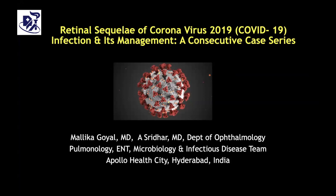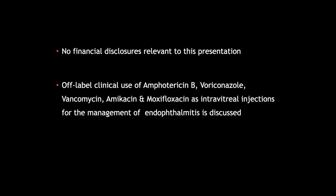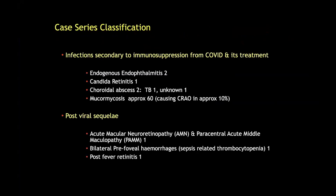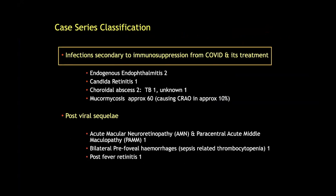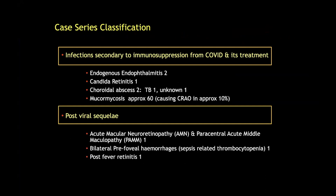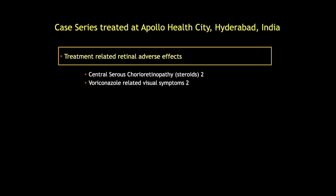Retinal sequelae of COVID-19 infection and its management: a consecutive case series treated at our hospital. Our cases can be classified as infections secondary to immunosuppression from COVID and its treatment, and included endogenous endophthalmitis, candida retinitis, choroidal abscess and mucormycosis causing central retinal artery occlusion, post-viral sequelae including acute macular neuroretinopathy and paracentral acute middle maculopathy, bilateral pre-foveal hemorrhages and post-fever retinitis, and treatment-related adverse effects including central serous retinopathy associated with steroid use and voriconazole-related visual symptoms.